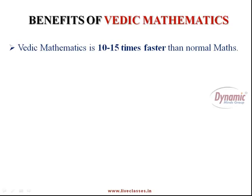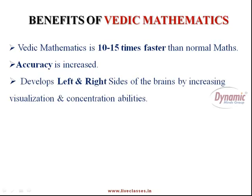Vedic Mathematics is 10 to 15 times faster than normal Maths. The number of steps involved are less, so the mistakes made are also less. So that means accuracy is increased. It helps in developing left and right side parts of the brain. Both sides of the brain are developed by using these techniques of Vedic Mathematics.